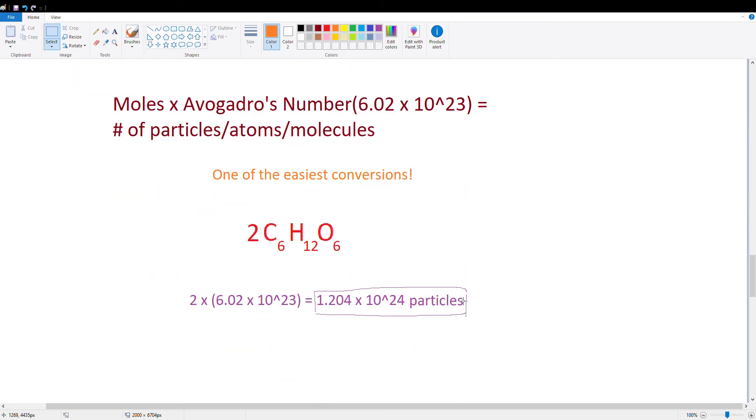Okay, so let's look at another conversion, and this is moles to number of particles. So in this formula, we multiply moles times Avogadro's number, which is 6.02 times 10 to the 23rd power. This gets us the number of particles, or atoms or molecules, depends on the scenario. Just say, we're just going to call it number of particles for now. And yes, this is one of the easiest conversions.